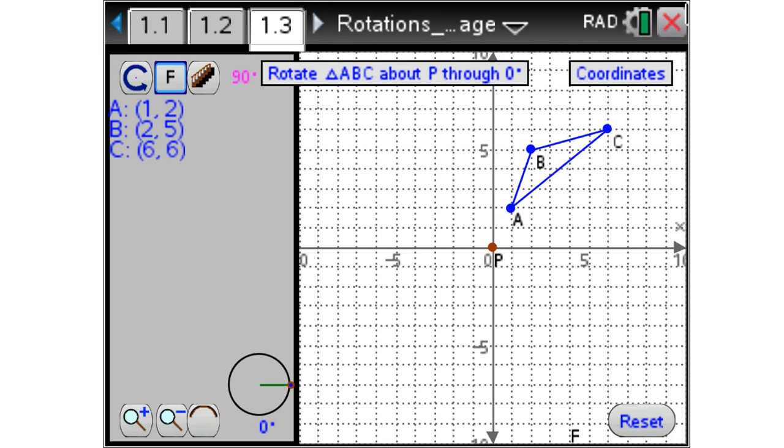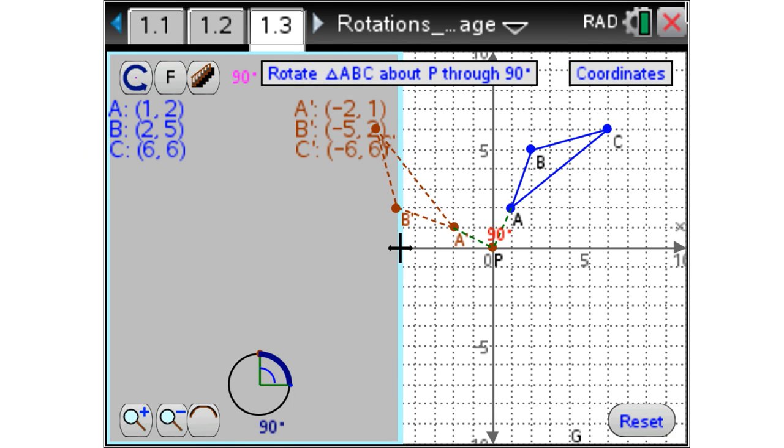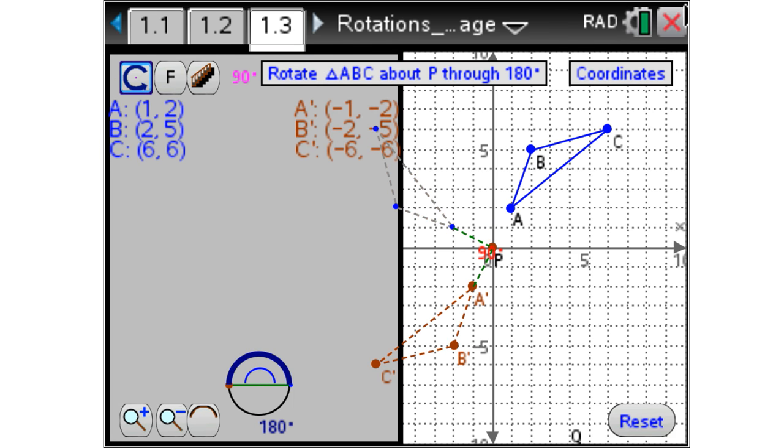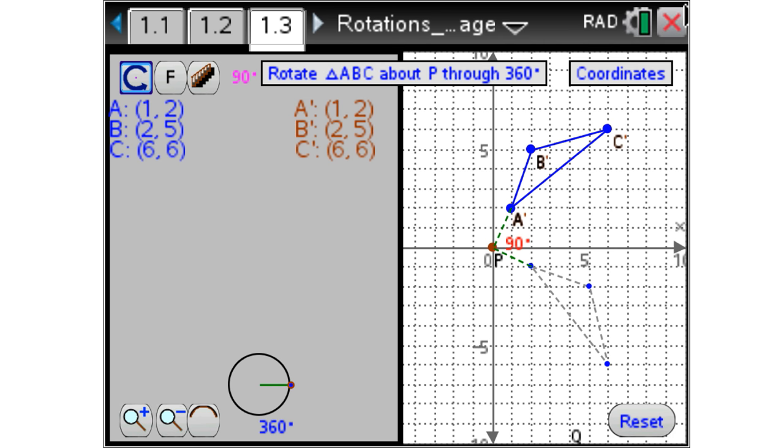Most teachers, unfortunately, teach rotations of 90 degrees only, that's the only angle, with a grid, and just tell the students what to do to the coordinates. Now the students are able to discover what those patterns are as shown here.